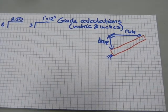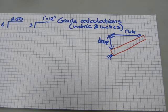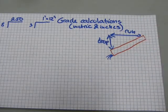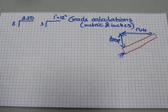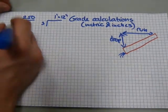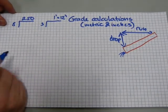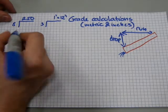So let's do a grade calculation when grade is given, drop is given, and we're calculating run. Let's start with metric this time. For example, we might have an 8 over 250.